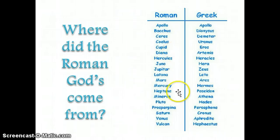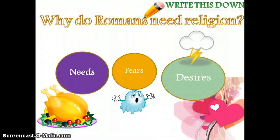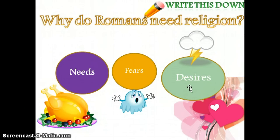The Romans practiced a religion where they worshipped many gods. Hopefully you know by now what the word for a religion with many gods is — it is polytheistic. The Romans used religion for the same thing that everyone in history has used religion for: to help them address their needs, their fears, and their desires. If I need something, I'm going to ask the gods for it. If I'm afraid of something, I'm going to ask the gods to protect me. And if I want something, I'm going to ask the gods to help me fulfill my desires.